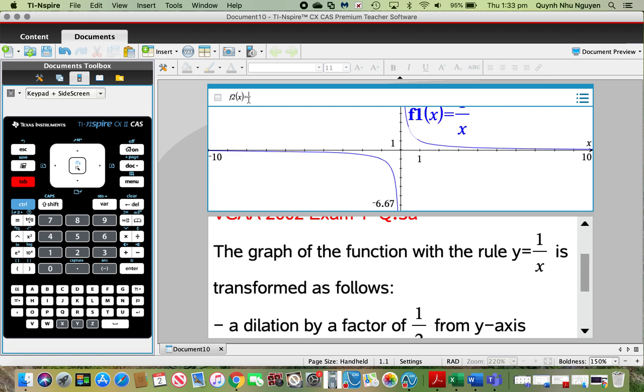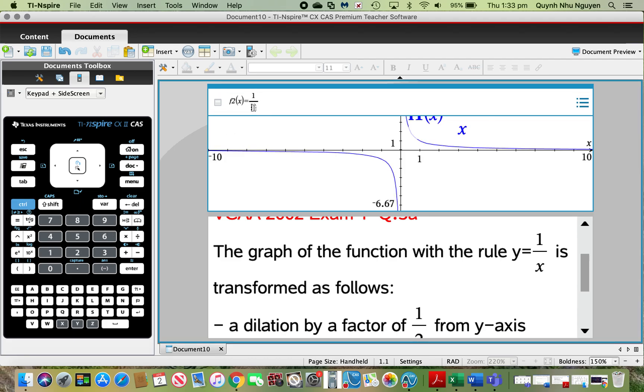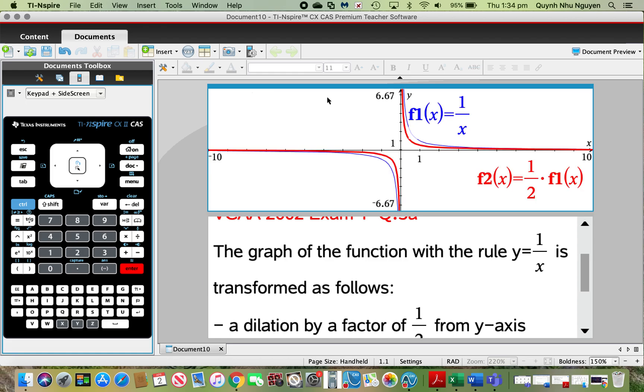So in f2, once I hit tab, what I'm going to do is multiply my f1 by a factor of a half. So a half, multiply, and in order to call that f1, we're going to press variable and select f1. Please input the x in as well. Enter.